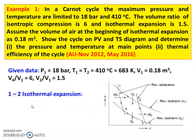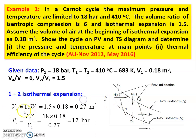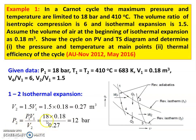Calculating pressure and temperature at all points. For isothermal expansion process 1 to 2: V2 = 1.5 × V1 = 1.5 × 0.18 = 0.27 meter cube. Using P1V1 = P2V2, P2 = P1V1/V2 = 18 × 0.18 / 0.27 = 12 bar. So P1 = 18 bar, P2 = 12 bar.